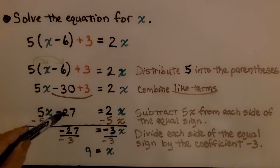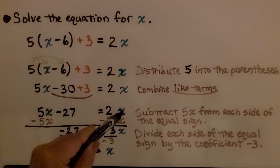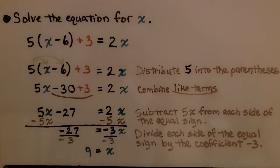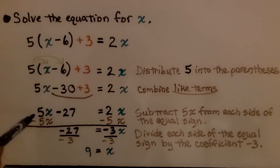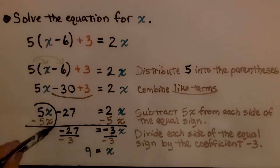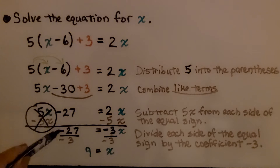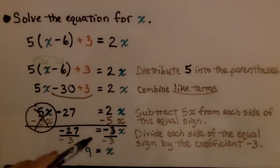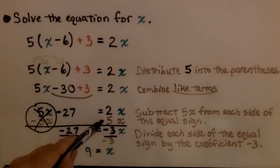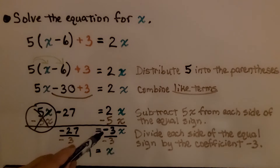Now we have 5x minus 27 is equal to 2x. We need to isolate x to one side of the equal sign. So we can subtract 5x from each side. That's going to create a zero pair here — we have a positive 5x minus 5x and that eliminates it. Now we just have minus 27 here. On this side, if we have 2x and take away 5x, that's going to give us negative 3x.